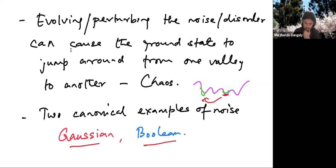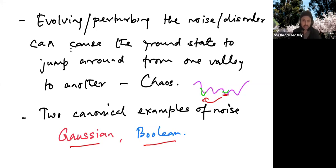For example, in Brownian LPP the underlying noise is Brownian motion, which falls in the Gaussian category. But there are other models like percolation where the Boolean setting is more natural.